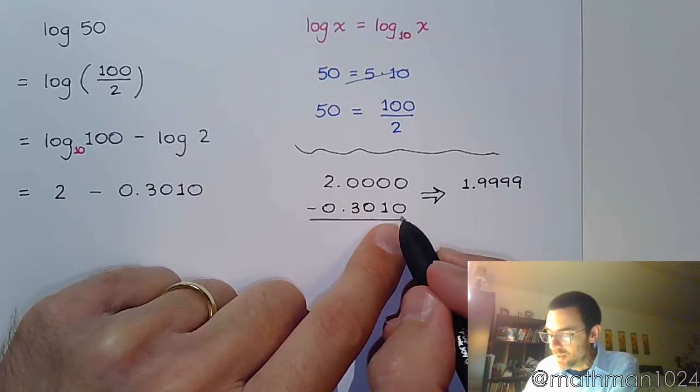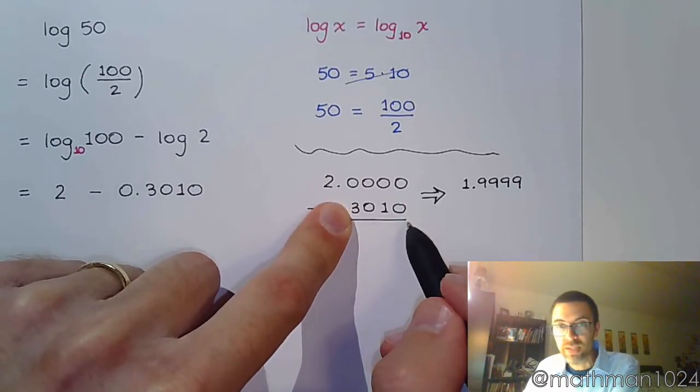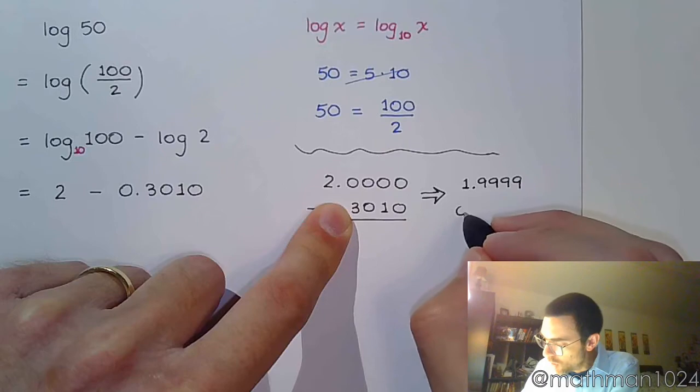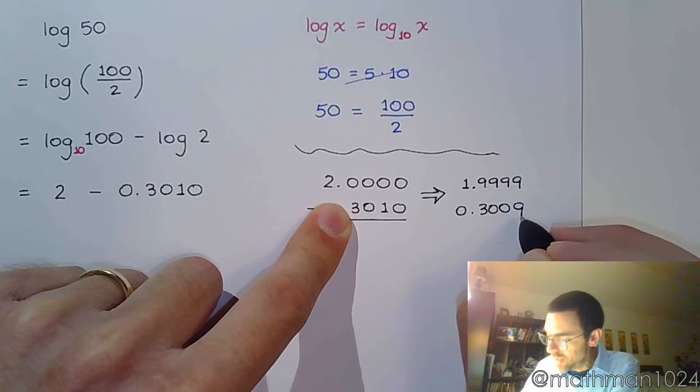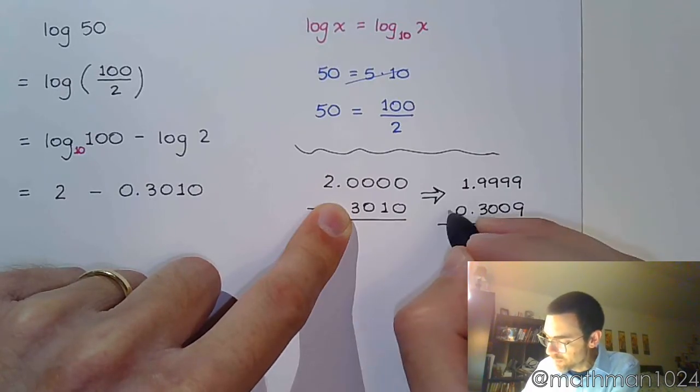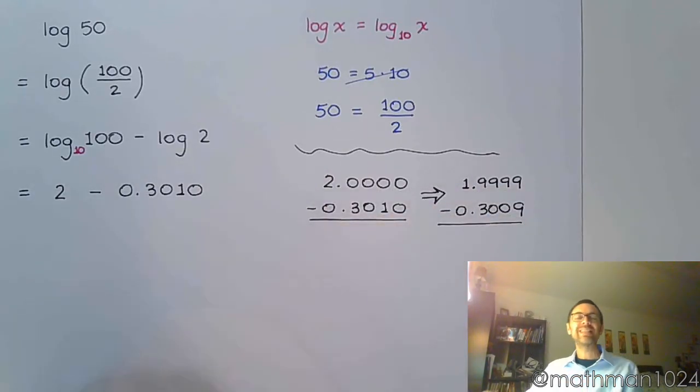And if you do the same thing to this, think about this as the number 3010. So if you take 1 off of this, this becomes 3009. So by taking 1 ten-thousandth off of each of those, I won't have to worry about doing all the borrowing. Check this out.